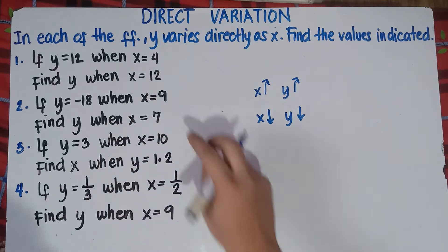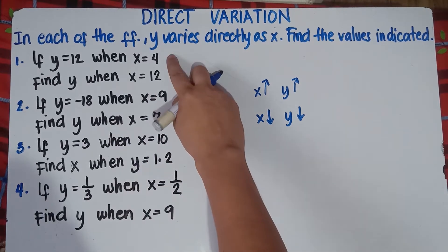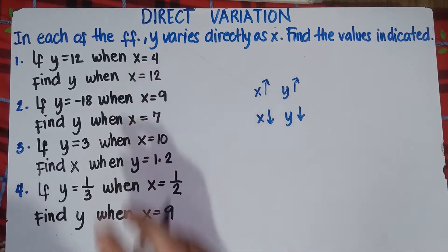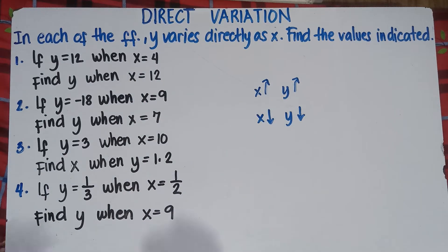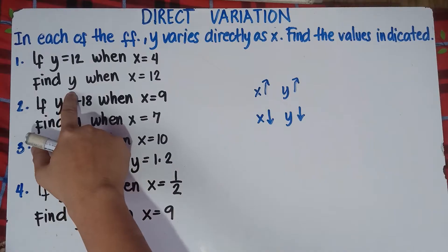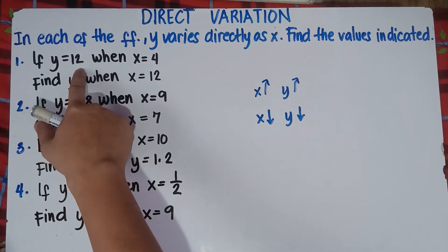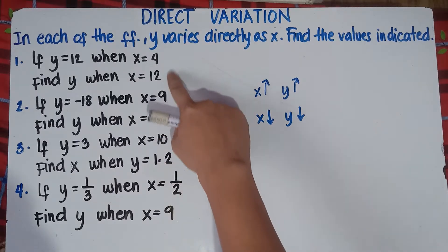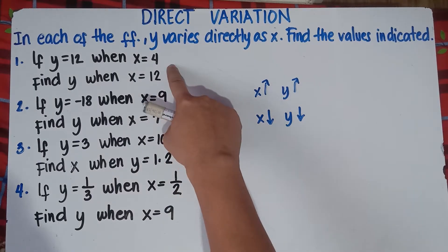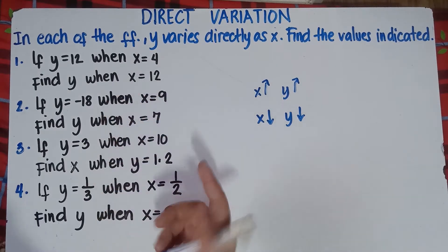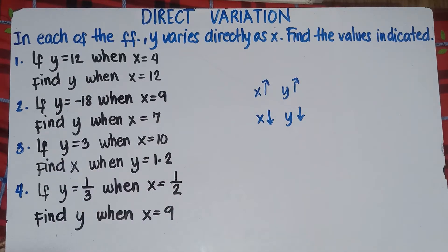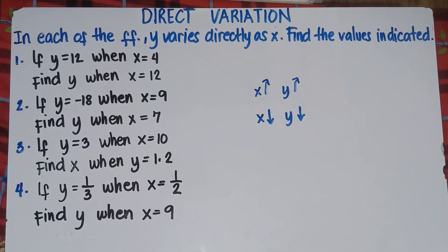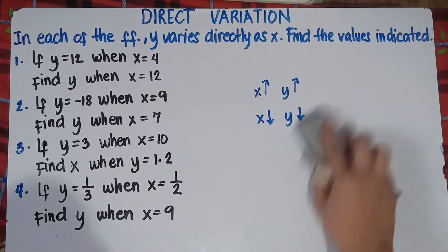So as you can see, class, our x value increases — from 4 it becomes 12. So therefore, you already have an idea that your y answer should be greater than 12, because our x value increases. So that's the thing there, class, in direct variation — your answer should be greater than 12.